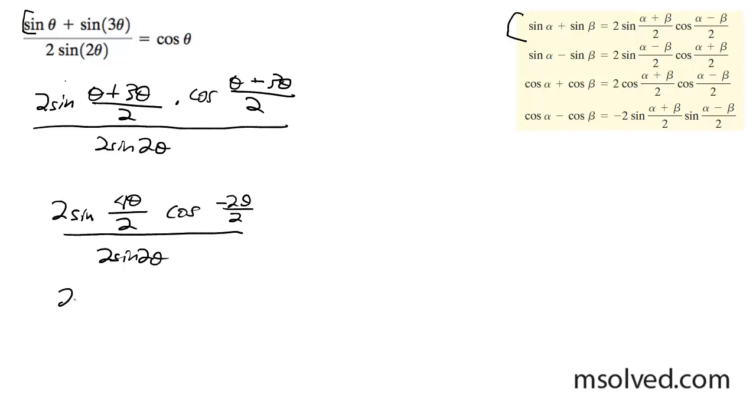And this becomes 2 sine 2 theta, and there's a negative on the cosine there, but because cosine's an even function, you can just get rid of it. So it becomes cosine theta all over 2 sine 2 theta.